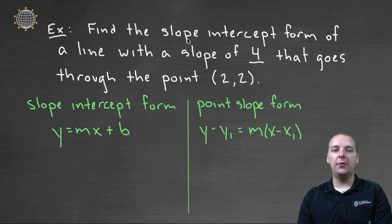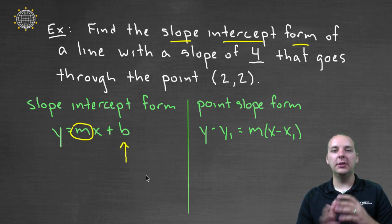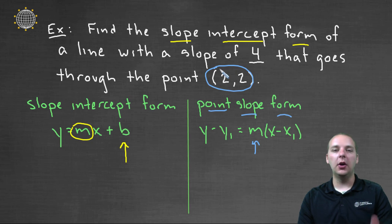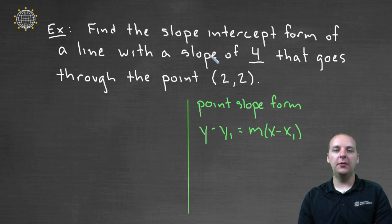You can either start with slope-intercept form, since that's what they're requesting. And then plug in the m, that's the slope of four. But for this b right here, you're really going to have to work. There's going to be some algebra you're going to have to do to discover the y-intercept, because that's not what you were given. Or we could try out our new guy, this point-slope form, that'll accept any slope and any (x, y) point, and we'd be good to go. So let's try it this new way. Let's see how this works. Let's see if we can fill in the blanks with point-slope form, even though that's not the way they want the final answer. Let's give it a shot.